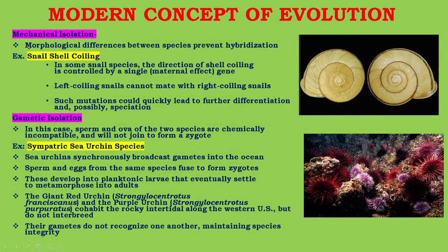Mechanical isolation: morphological differences between species prevent hybridization. For example, snail-shell coiling. In some snail species, the direction of shell coiling is controlled by a single maternal-effect gene, and a left-coiling snail cannot mate with a right-coiling snail. Such mutations could quickly lead to further differentiation and possibly speciation.